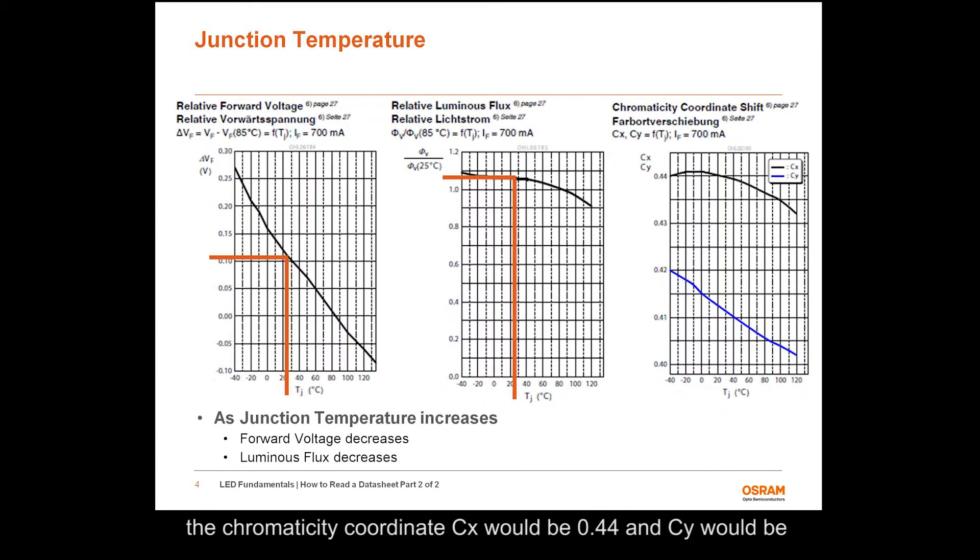For example, the chromaticity coordinate CX would be 0.44 and CY would be 0.4125 at 25 degree junction temperature. All three graphs on page 13 and 14 fully characterize the behavior of the LED with respect to temperature, current, and forward voltage.